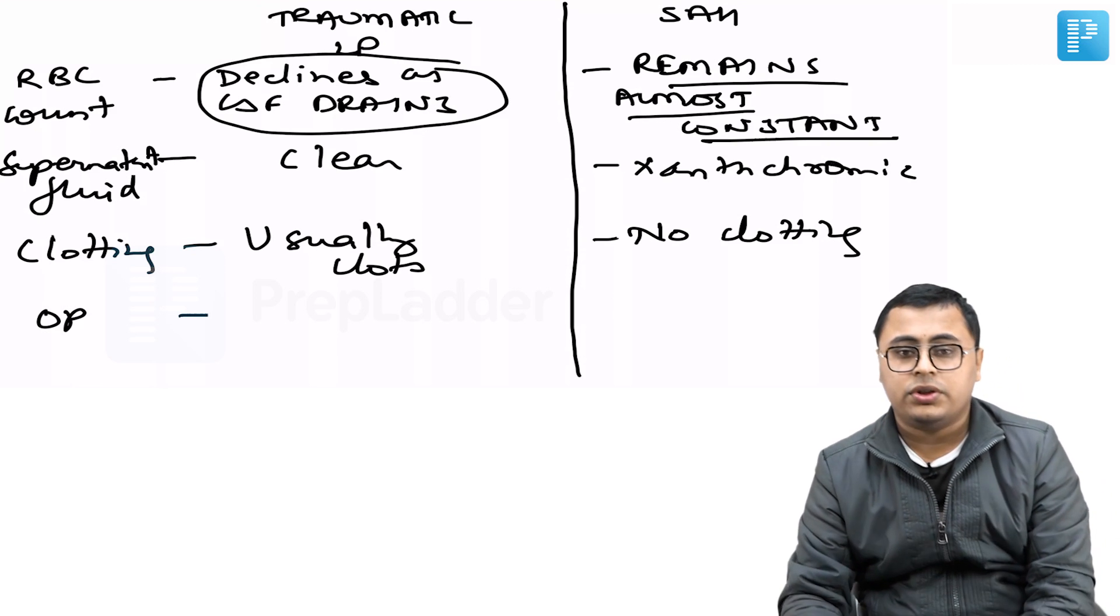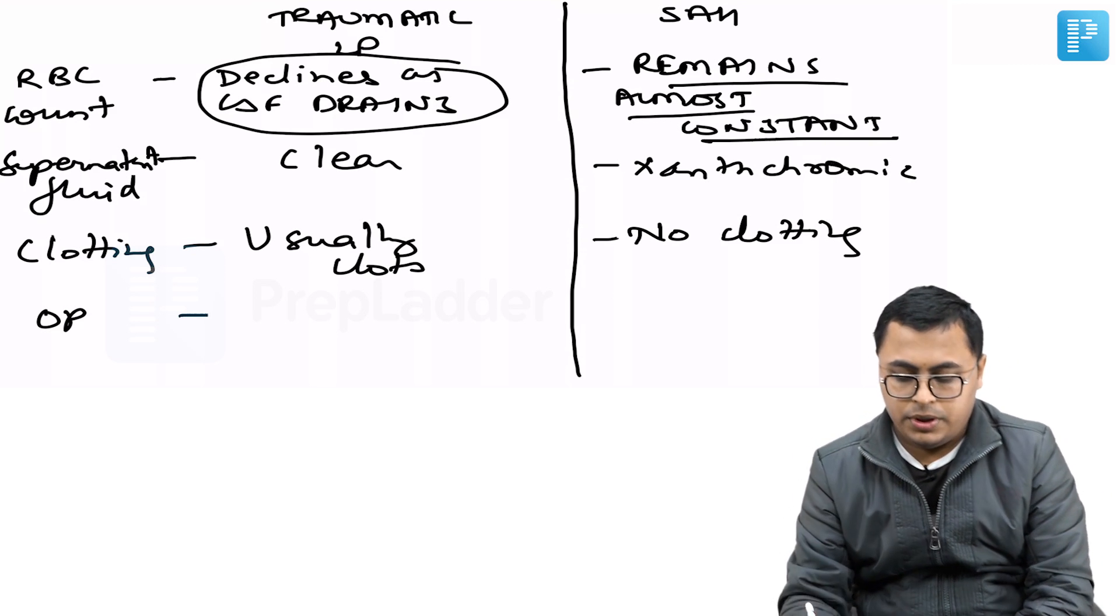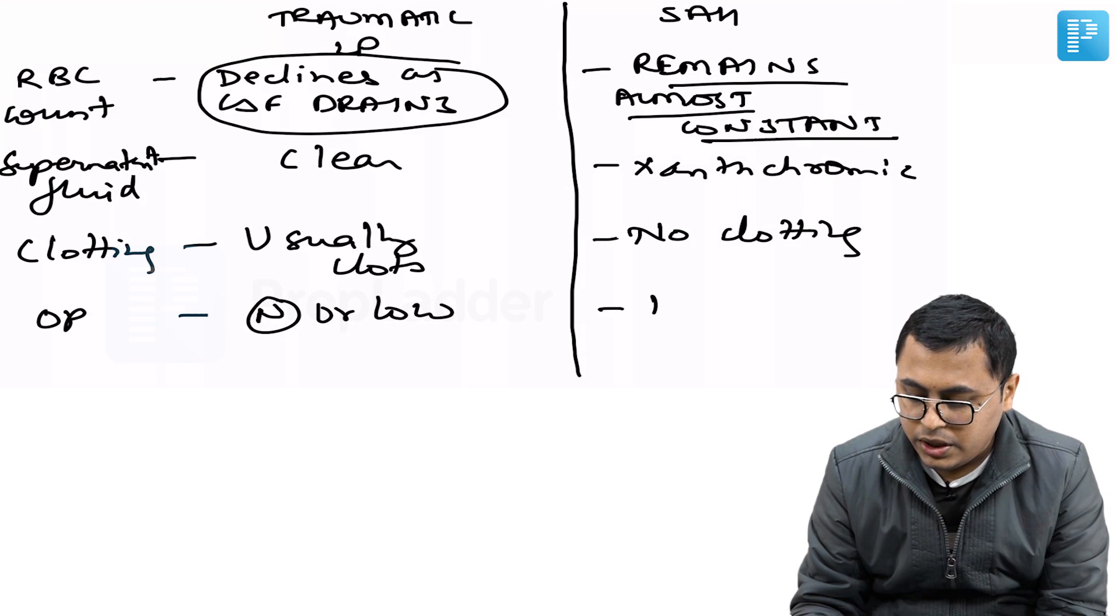Opening pressure is the initial pressure we get once we start doing the LP. In traumatic LP it is usually normal or low, while in subarachnoid hemorrhage it is usually high.